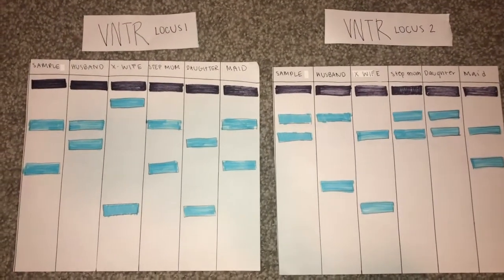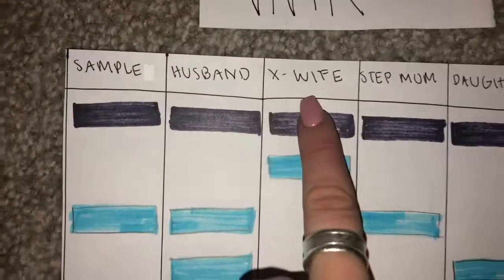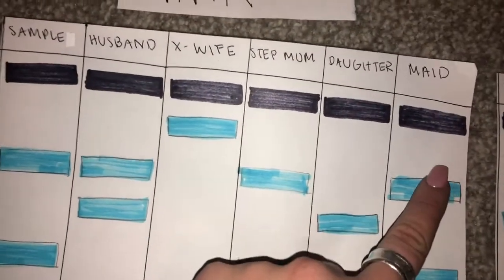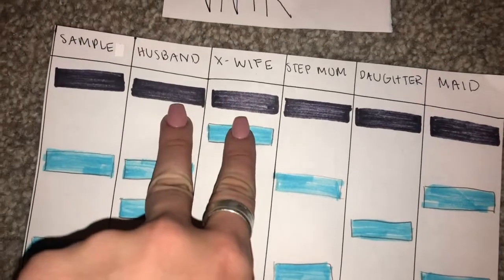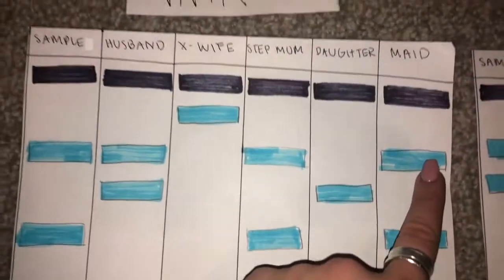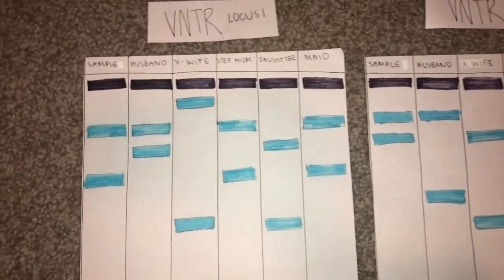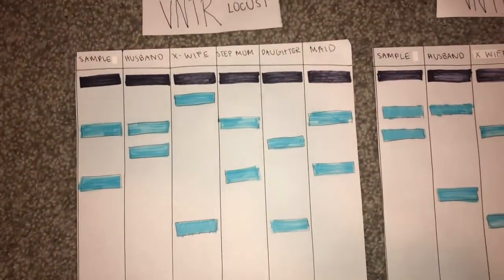The husband is our victim and the other suspects involved are the ex-wife, the stepmom, the daughter, and the maid. The daughter was from the husband and ex-wife, then the stepmom came into the picture, and there was a maid as well. The husband was murdered on Friday the 13th and we will be figuring out who did the crime.